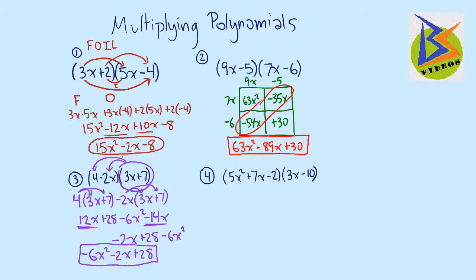Now, this fourth strategy is actually using like a traditional multiplication method. So we are actually going to be stacking these on top of each other. And I'm going to put multiplication in parentheses here because we need to multiply by both the negative 10 and the 3x. So we start by just going through and saying, okay, negative 2 times negative 10 is a positive 20. 7x times a negative 10 is a negative 70x. And 5x squared times a negative 10 is a negative 50x squared.